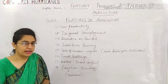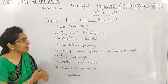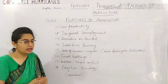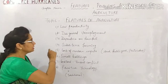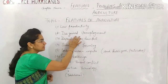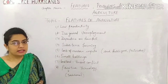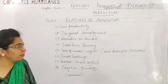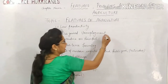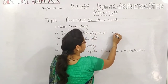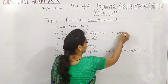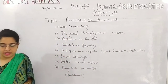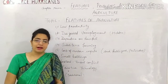The next feature of Indian agriculture is disguised unemployment, also known as hidden unemployment. Here, people are employed but at the same time they are effectively unemployed. You might wonder how that is possible.